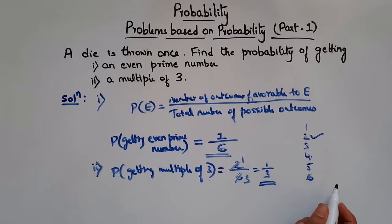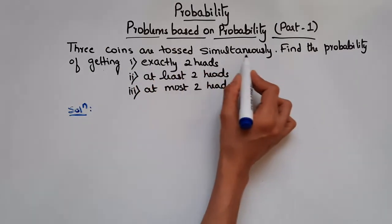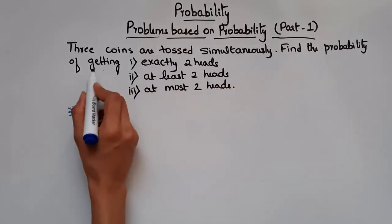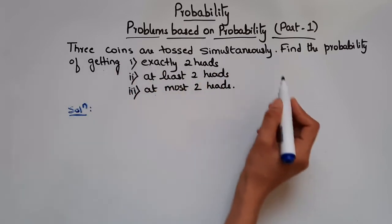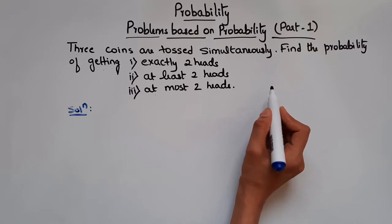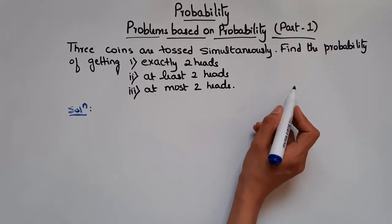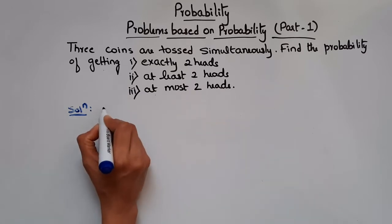Now let's see the next problem. It says 3 coins are tossed simultaneously. Find the probability of getting exactly 2 heads, at least 2 heads, and at most 2 heads. When 3 coins are tossed at the same time, the possible outcomes include combinations like 2 heads and 1 tail, 2 tails and 1 head, 3 tails, and so on.